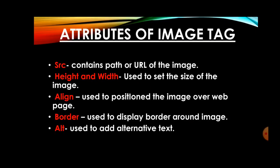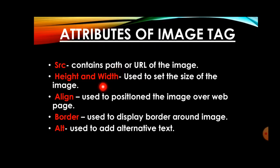We are going to discuss all the attributes of image tag. Image tag contains five most important attributes. The first one, as I have already told you, is SRC — it contains the path or URL of the image. After this, height and width attributes are used to set the size of the image. If you do not apply these, the image can cover the whole web page. You can reduce or increase the size according to user requirement.